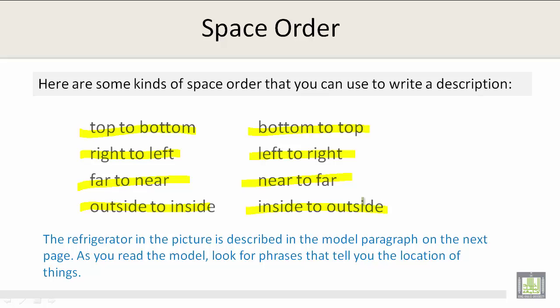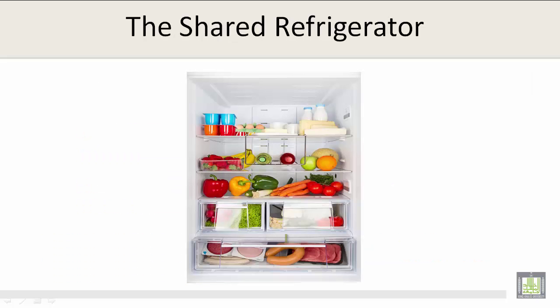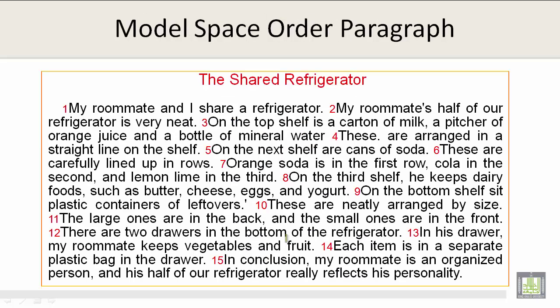The refrigerator in the picture is described in the model paragraph on the next page. As you read the model, look for phrases that tell you the location of things. Let's take a look at this picture — the shared refrigerator. How would you describe it?